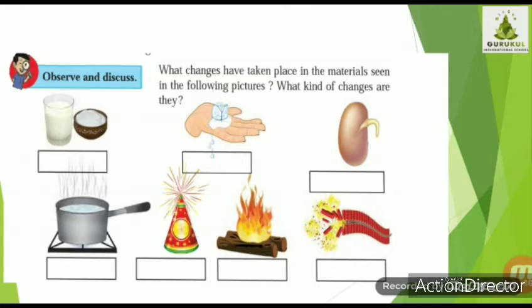One form of a substance is transformed into a totally new form, so we can call it a chemical change and also an irreversible change. Reversible means we can obtain back the original substance — things which can go forward and reverse again and again. Irreversible means once that change takes place, the original substance cannot be obtained again.